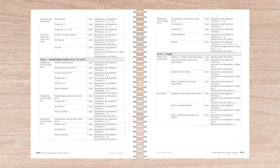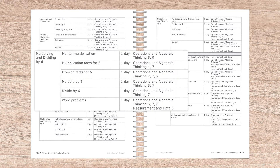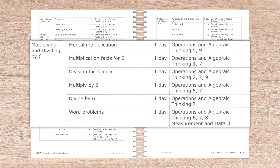You can see this by taking a look at the teacher guide overview for unit 4. This overview provides information on the lesson topics broken down into daily lessons, along with notes on how each lesson corresponds to the Common Core State Standards. In this course, multiplying and dividing by six is covered over a six-day period, which includes one day for mental multiplication and a day each for multiplication facts and division facts.